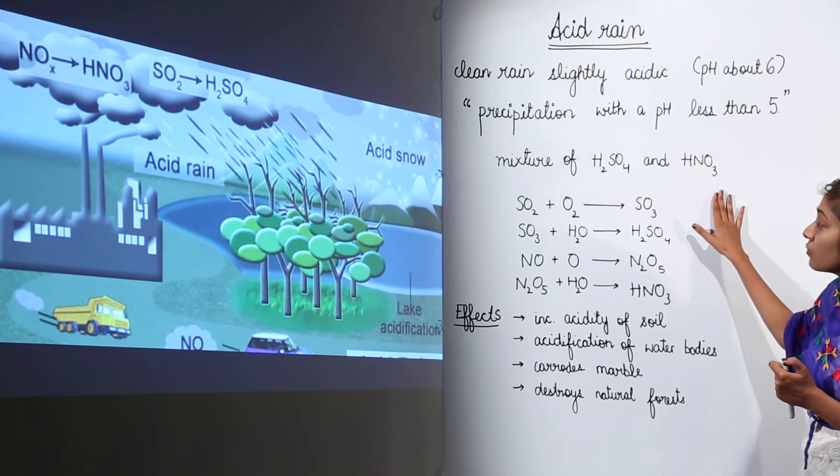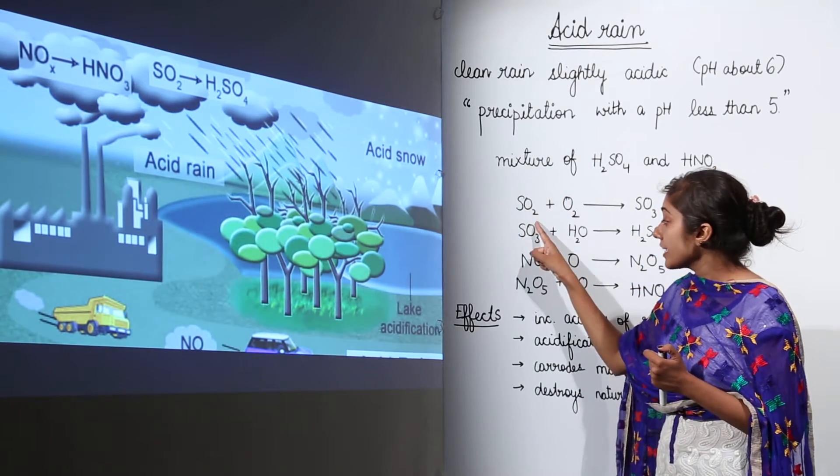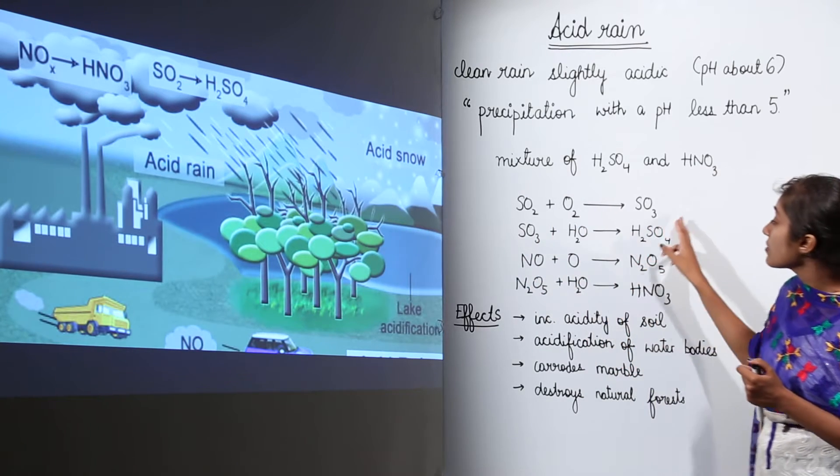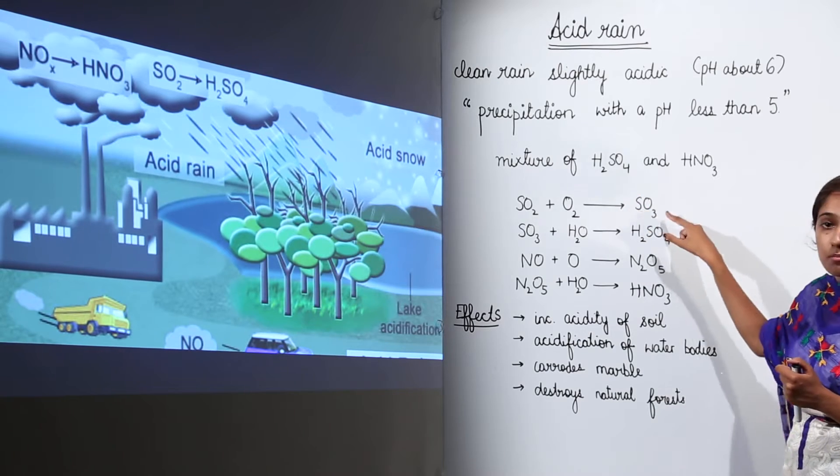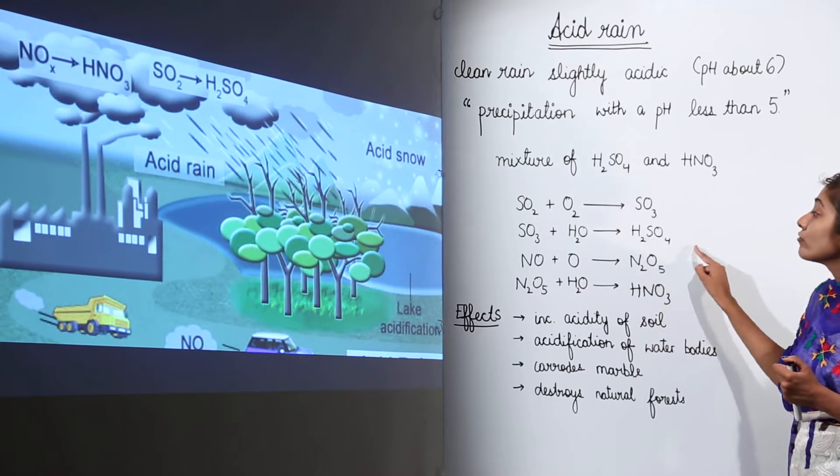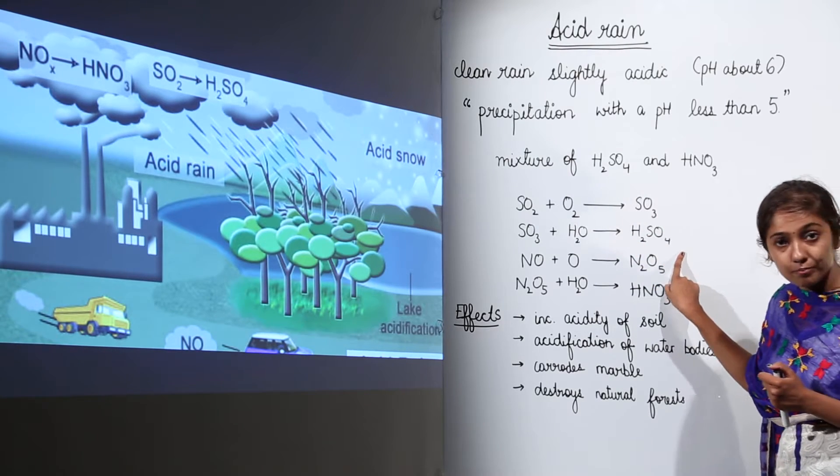How are they formed? Well, when we have sulfur oxides and nitrogen oxides, first of all look at the sulfur oxides. They form sulfur trioxide, and when this oxide combines with water vapor, it forms H2SO4, which is sulfuric acid.